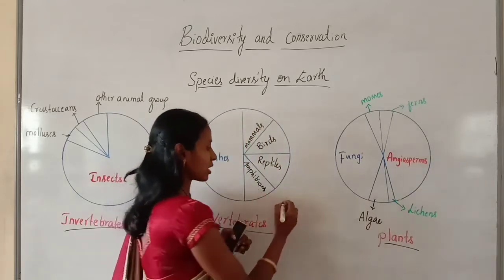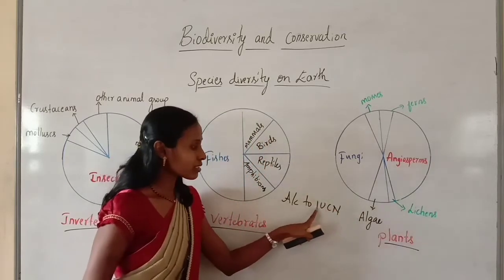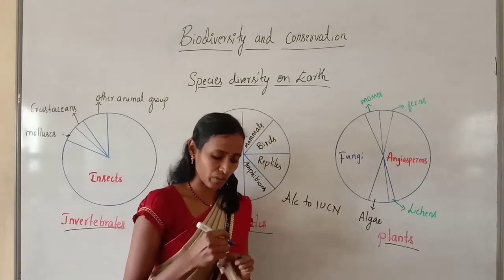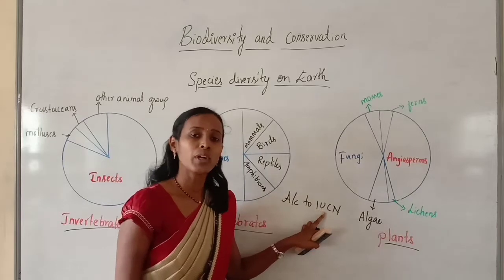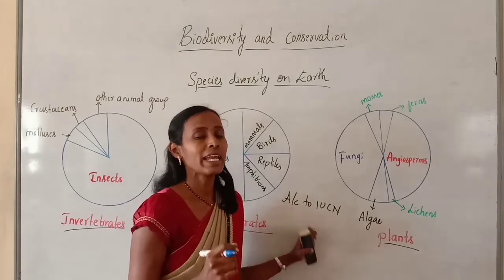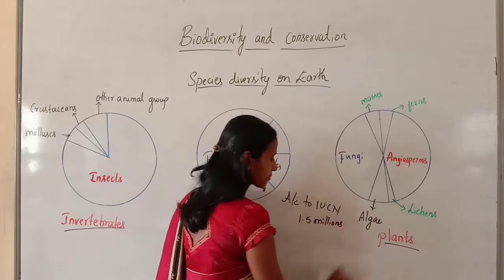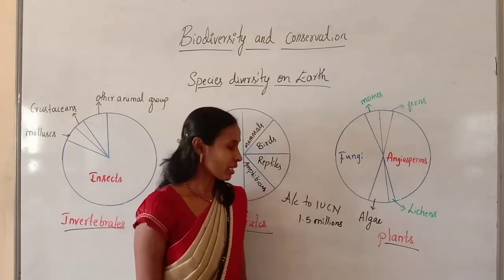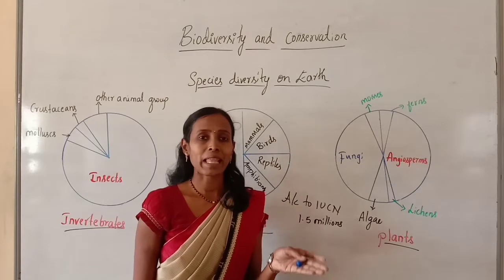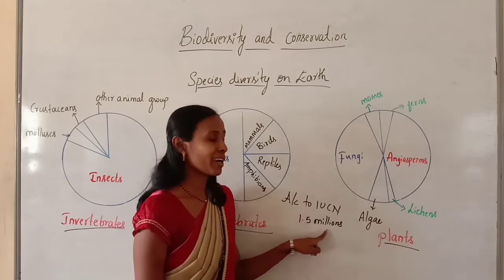According to IUCN — the International Union for Conservation of Nature and Natural Resources — the total number of plant and animal species described so far is likely more than 1.5 million.